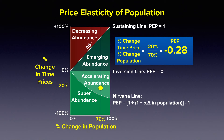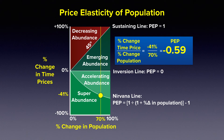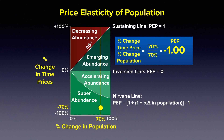If we calculate the Nirvana line at 70% population growth, that value would indicate minus 41%. This is a condition where prices are decreasing proportionally at the same rate that population is increasing, yielding a PEP of 0.59 at a 70% population increase — putting us right on the Nirvana line. If prices were decreasing at a greater rate, say minus 70%, the PEP would be minus 1, placing us in the superabundance zone.